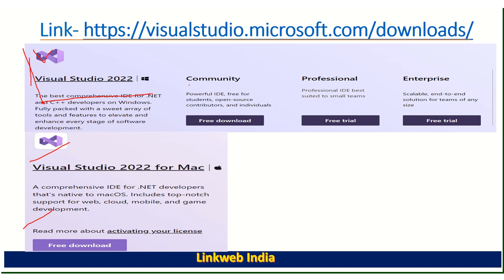For Windows, there are three editions: Community, Professional, and Enterprise. Community edition is totally free for developers — for beginners or students it's totally free, you don't have to pay anything. You have to install the Community version on your machine to develop APIs.